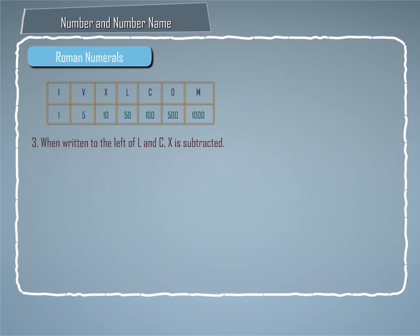Rule 3: When written to the left of L and C, X is subtracted. That is, XL equals 50 minus 10 equals 40, and XC equals 100 minus 10 equals 90.